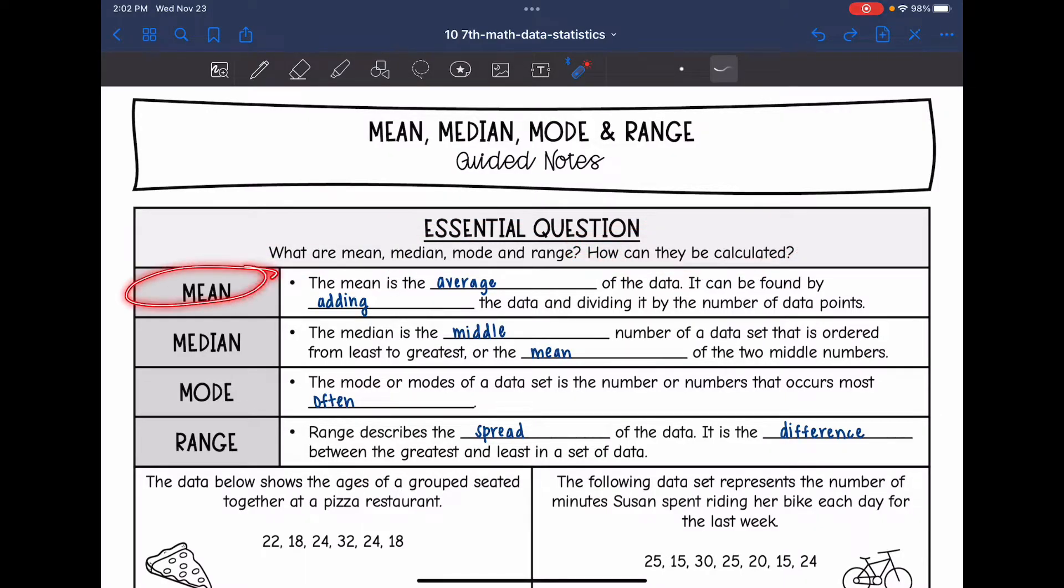So the mean is the average of the data. It can be found by adding the data and then dividing it by the number of data points.